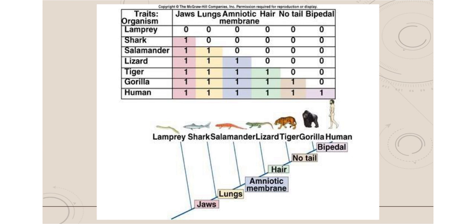Cladograms are created from tables of common characteristics. On the AP test, they may give you a table with zeros and ones: zero means the animal does not have the trait, one means it does, and they might not be in order. Because this table was in order, you see the lamprey has almost nothing in common while the human has all the traits. You use this table to construct the cladogram below. For example, the red indicates jaws — the lamprey lacks jaws, and everything after that mark on the cladogram has jaws. A human and gorilla are closer together, meaning they're more closely related, while a lizard and a shark are farther apart.